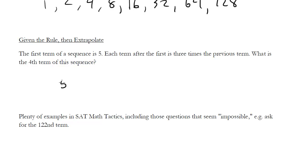The first term of a sequence is 5. Each term after the first is 3 times the previous term. What is the 4th term of the sequence? Okay, so they tell us the rule. Each term is 3 times the previous. So 5 times 3 is 15, 15 times 3 is 45, and 45 times 3 is 135. And here's the 4th term and that would be my answer.